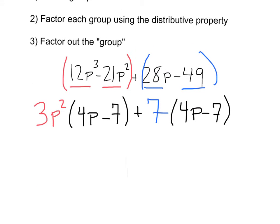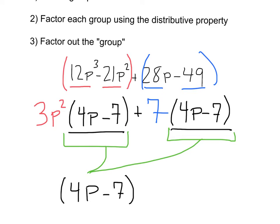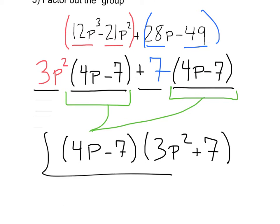From here, you might notice that we've got a 4p minus 7 here and a 4p minus 7 here. That means you're on the right track. These always should be identical. Because for step number three, we're going to factor out this whole group from the equation. Just like we do when you factor by distribution, we're going to pull this 4p minus 7 out because it is a common factor of each of these terms. After that, we're just going to be left with 3p² plus 7. And here, we can consider ourselves factored.